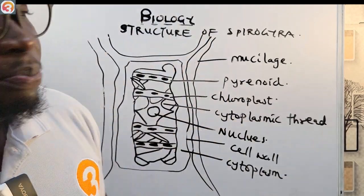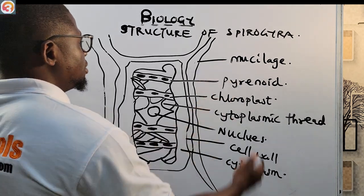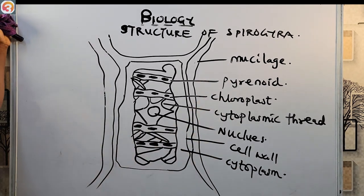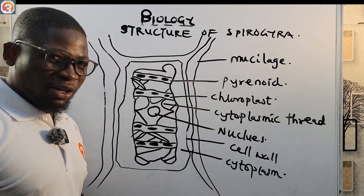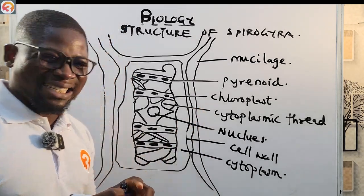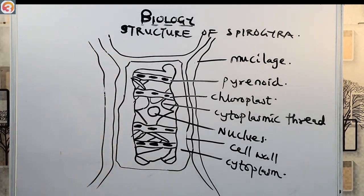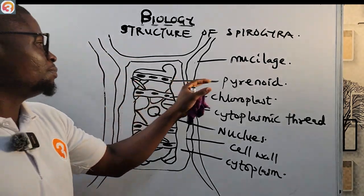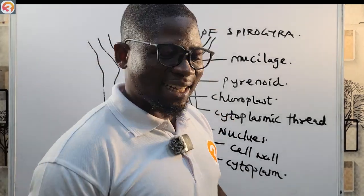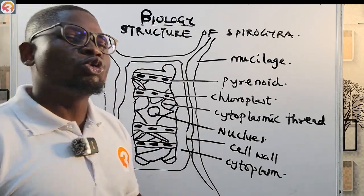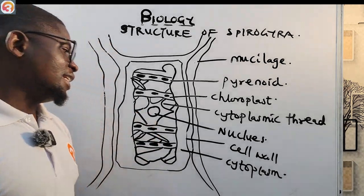Now, the structure of Spirogyra. It has the mucilage, which protects it from pathogens and animals. Mucilage also acts as a lubricant and helps to hold the filaments together. Spirogyra exists as a filament — it is filamentous and multicellular. It also has the pyrenoid, which helps to store starch. It has a chloroplast, meaning it is photosynthetic and can manufacture its own food — it is autotrophic. It also has cytoplasmic threads, a nucleus, a cell wall, and cytoplasm.